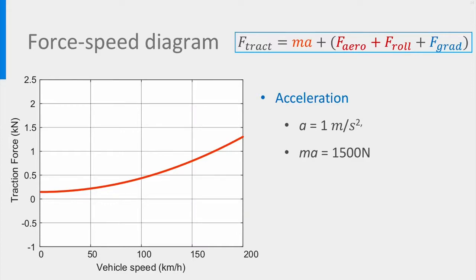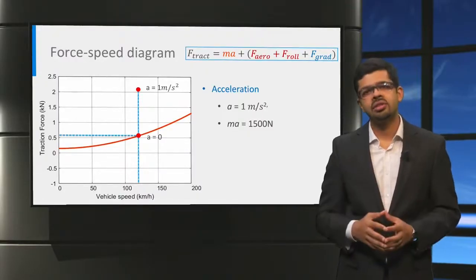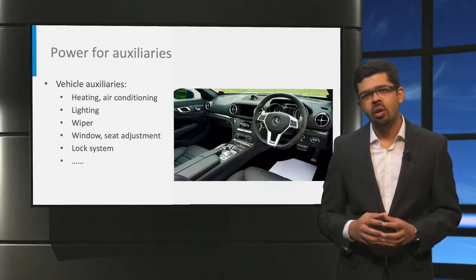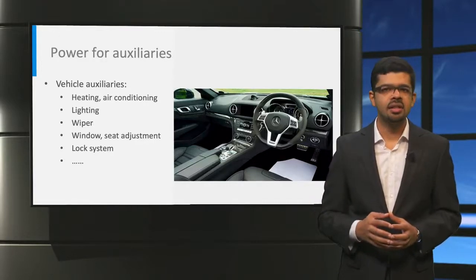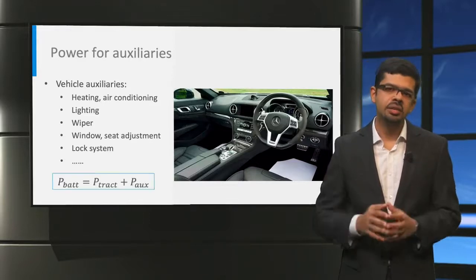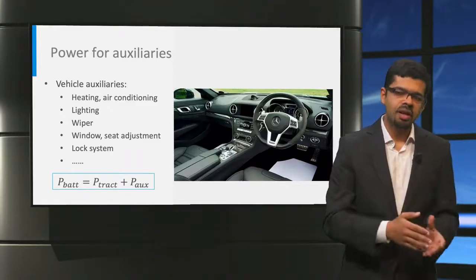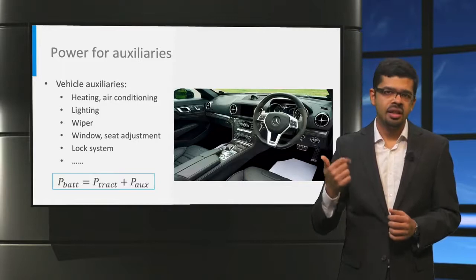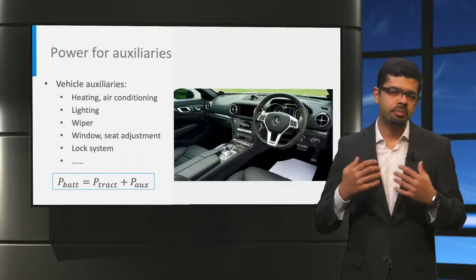Finally, let us consider the case when the vehicle has a finite acceleration. The force-speed curve shown is for the same car with 0% gradient and zero acceleration. Since the car's mass is 1,500 kg, for every 1 m/s² of acceleration, an extra 1,500 N of traction force is required from the powertrain. Besides the traction force, the electric vehicle battery also provides power for vehicle auxiliaries such as heating, air conditioning, lighting, and the windscreen wiper. Hence, the net power delivered by the traction battery P_bat is the sum of the traction power P_traction and the auxiliary power P_aux. At times, the auxiliary power for heating, ventilation, or air conditioning can be quite significant compared to the power required for driving.